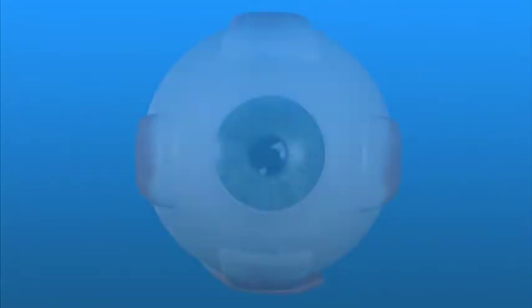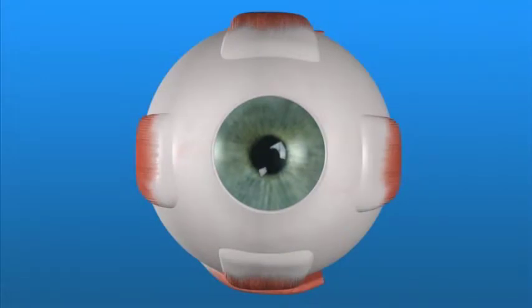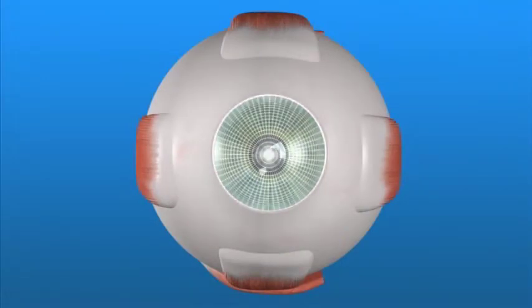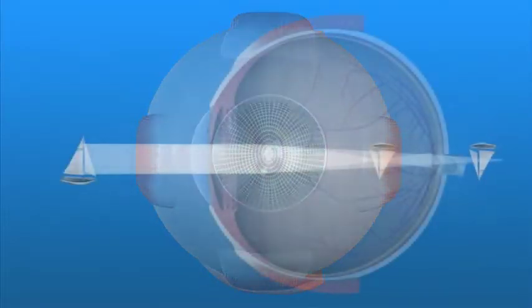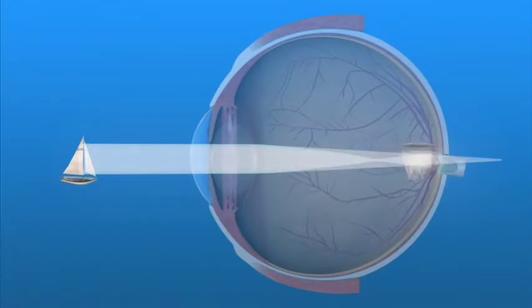Astigmatism occurs when the cornea has an uneven curve, with the form of a football instead of a basketball. The light that passes through this uneven cornea does not focus properly on the retina. Both distance vision and near vision appear blurred.